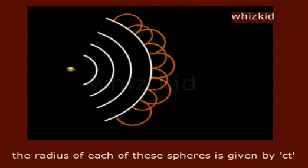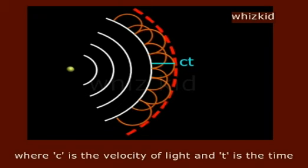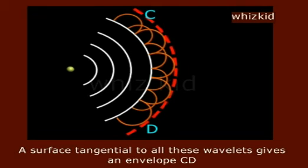The radius of each of these spheres is given by CT, where C is the velocity of light and T is the time. A surface tangential to all these wavelets gives an envelope CD.